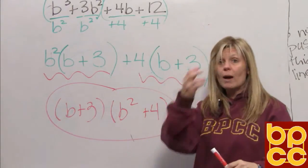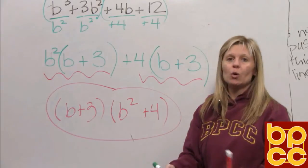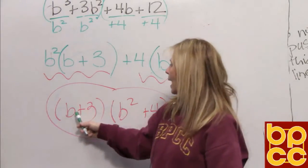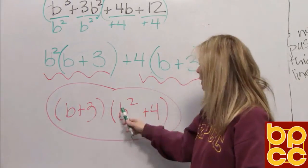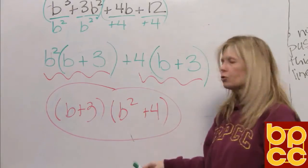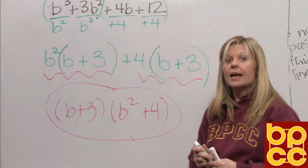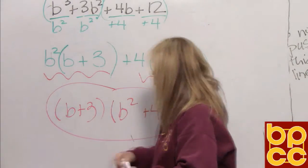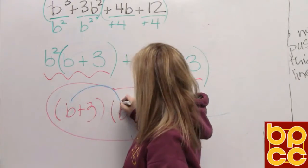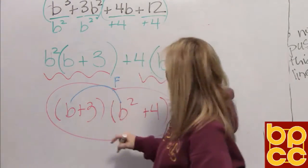You'll know you're correct because you can check it doing your multiplication. A binomial, two terms, times a binomial, two terms, if you recall, is foiling. So if we do foil, let's check it.